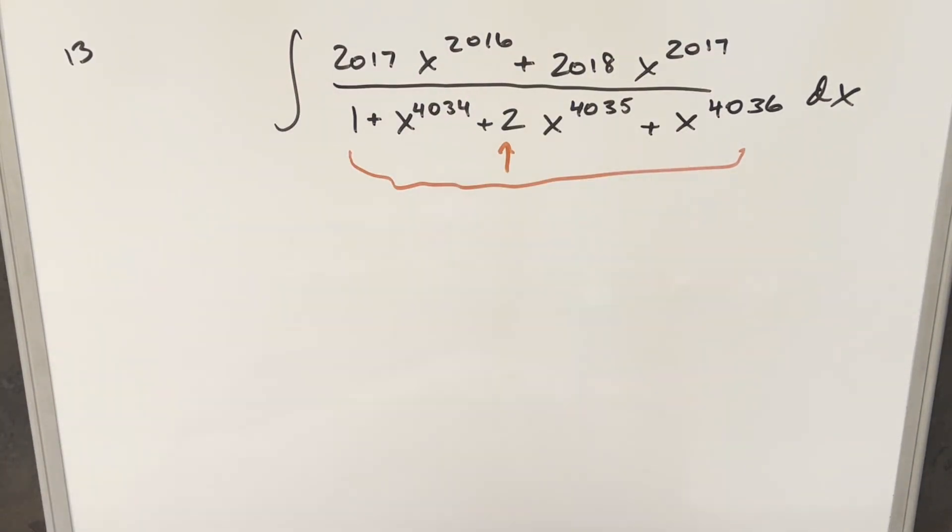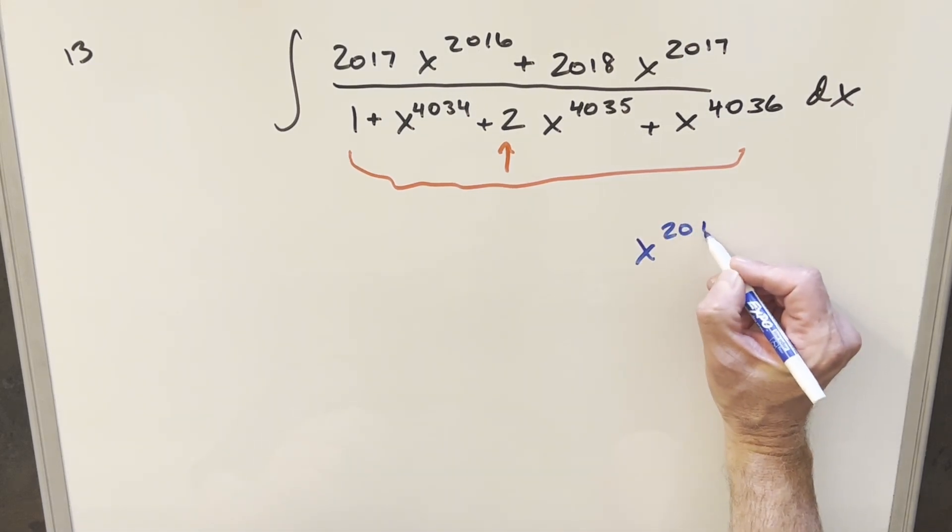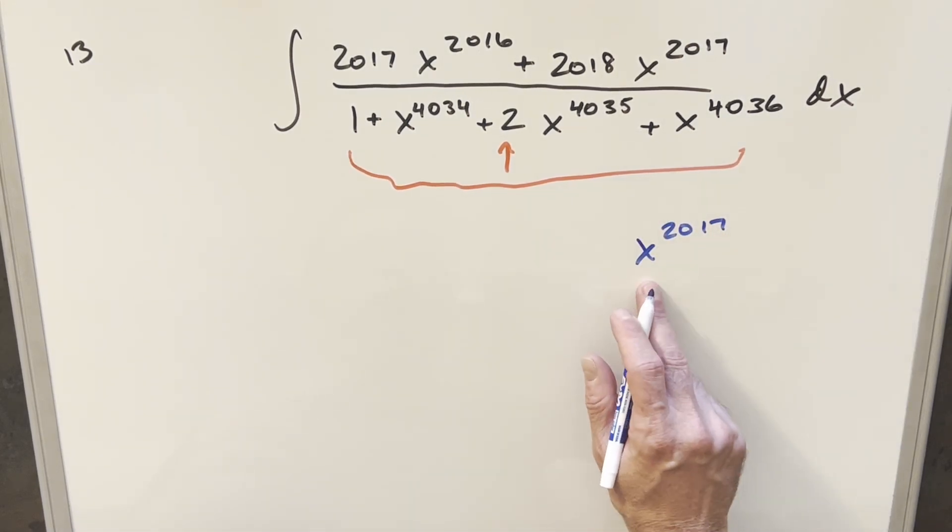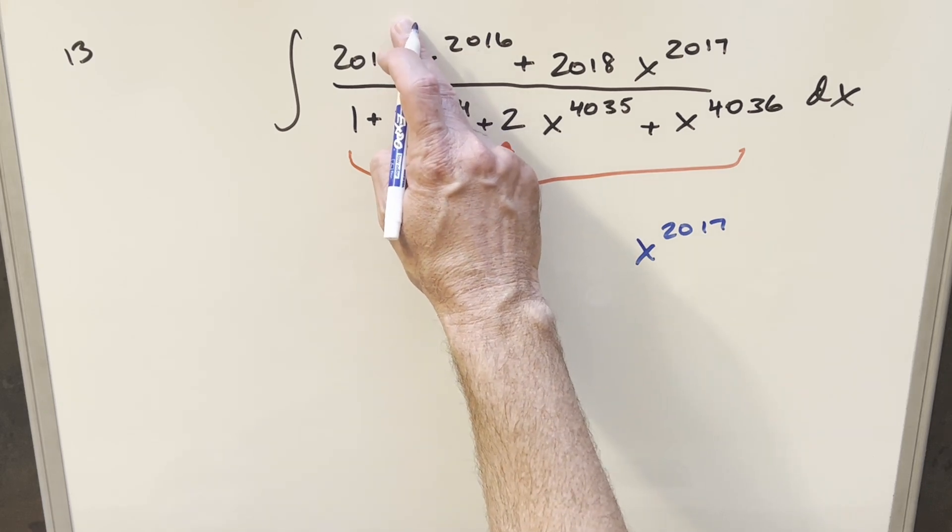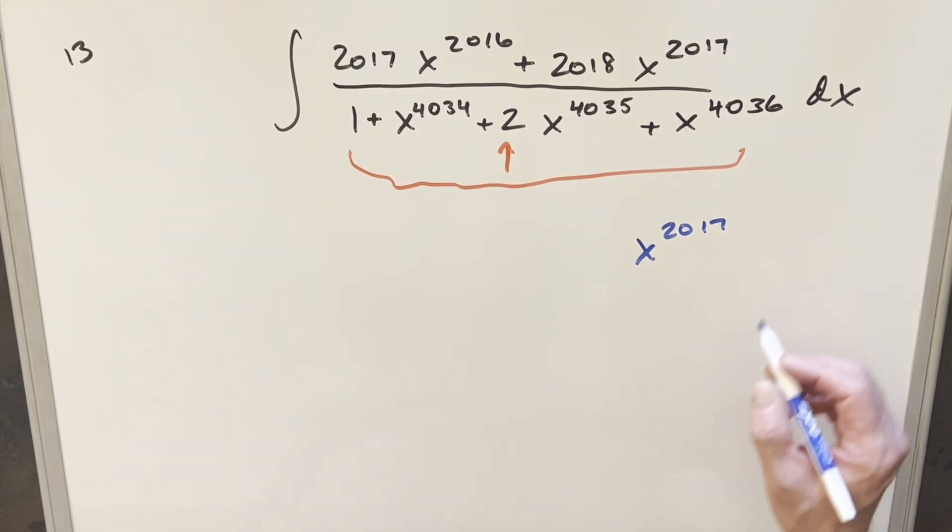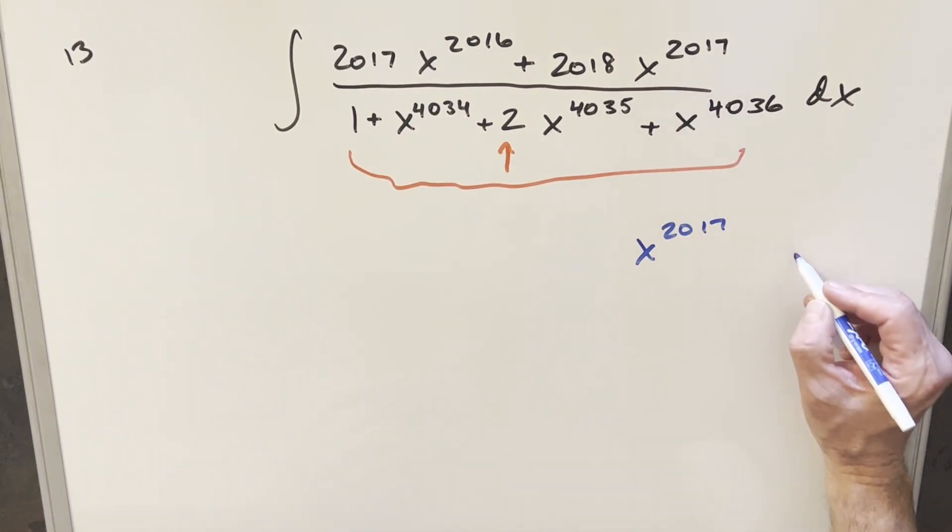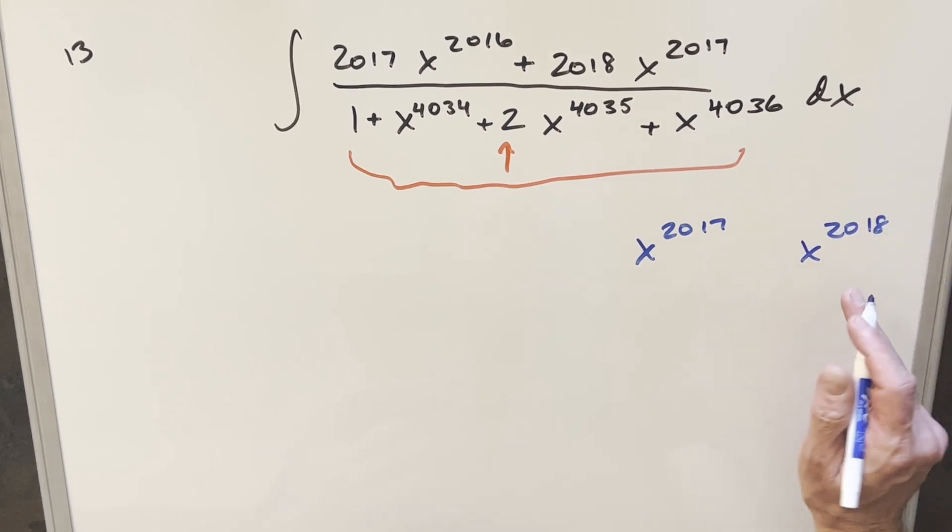This makes me think of power rule because if we just look at, for example, x to the 2017, the derivative of that is going to be this right here. And then also, for this one, if we look at x to the 2018, the derivative of this is going to be this right here.